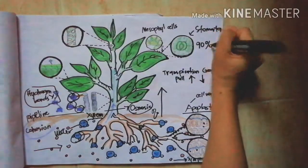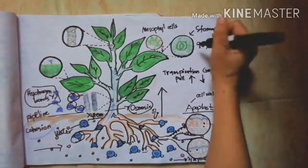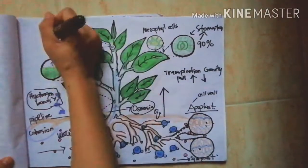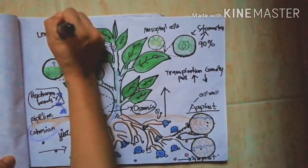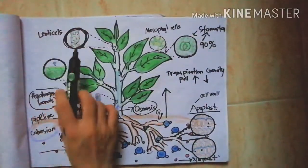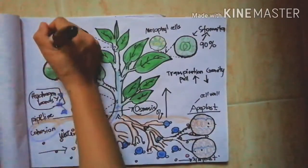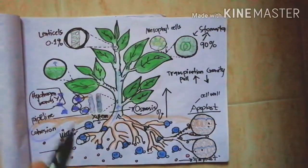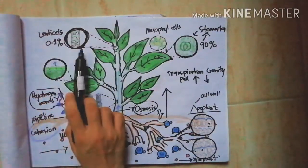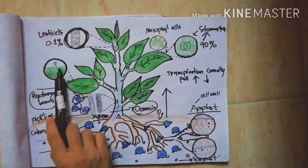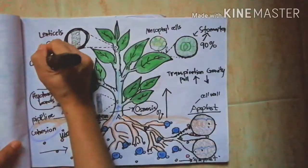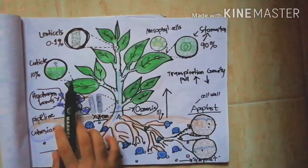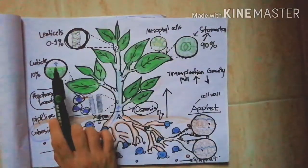Aside from stomatal transpiration where about 90% of water loss from plants takes place, transpiration is done through lenticels which are minute openings on the stem. It is called lenticular transpiration. About 0.1% of water loss takes place through it. Transpiration also takes place from the leaf's surface. It is covered by waxy layer called cuticle.